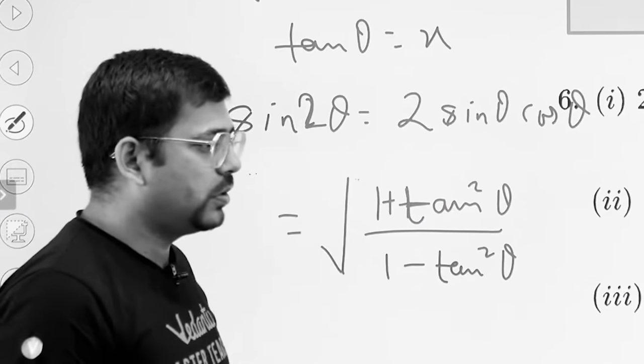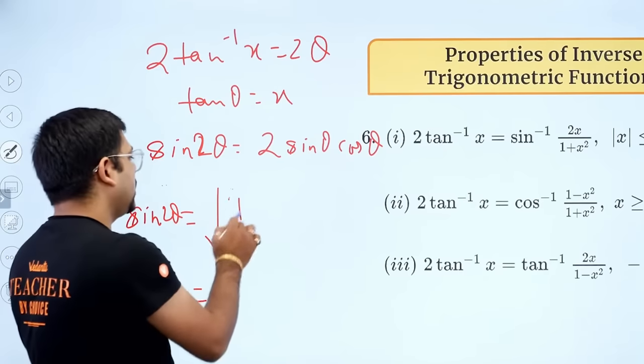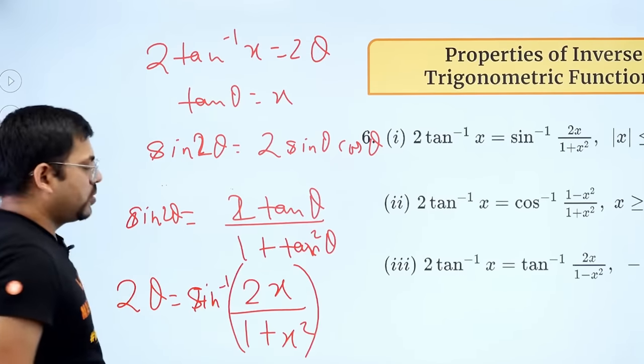How do you understand? What happened? What did you think? Okay, I remembered. So this will be 2 tan theta. So this will be proof.